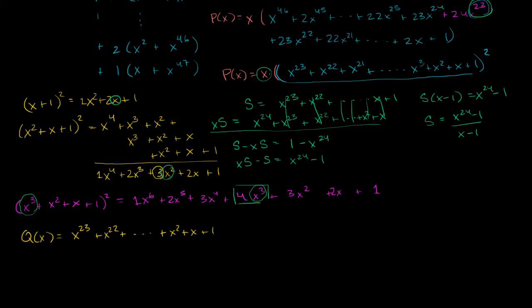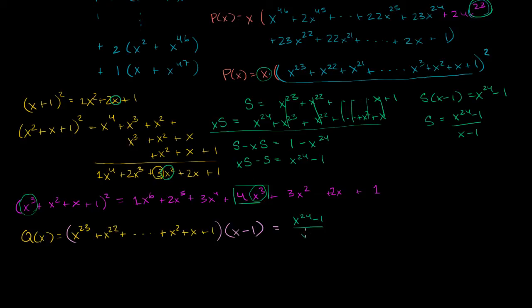Even better, let's define q of x as this times x minus 1. This q of x will have all of the same distinct roots that matter, but it will also include the root x equals 1, which is not actually a root of the original expression (plugging in x equals 1 gives 24, not 0). This simplifies things because q of x equals x to the 24th minus 1.